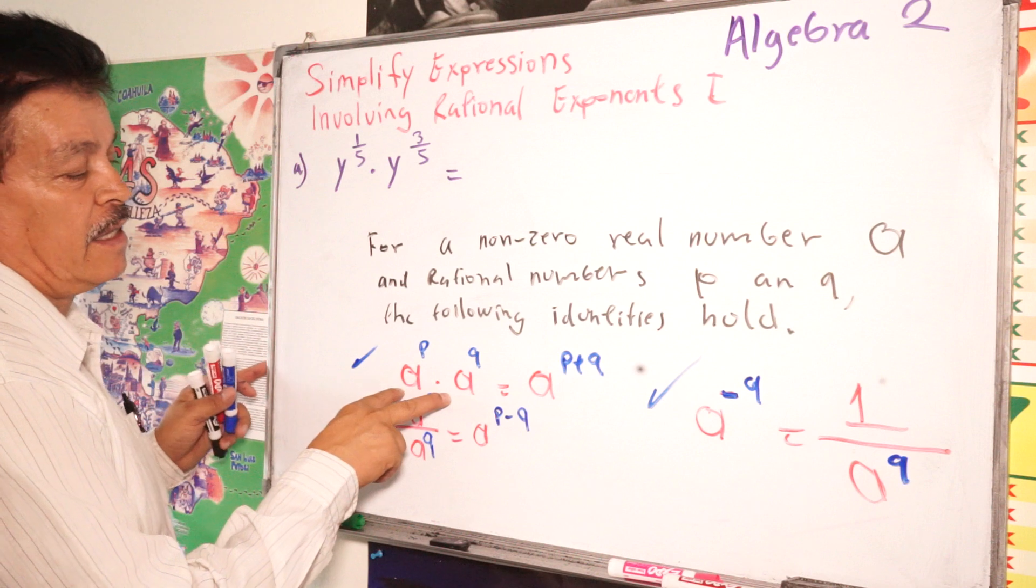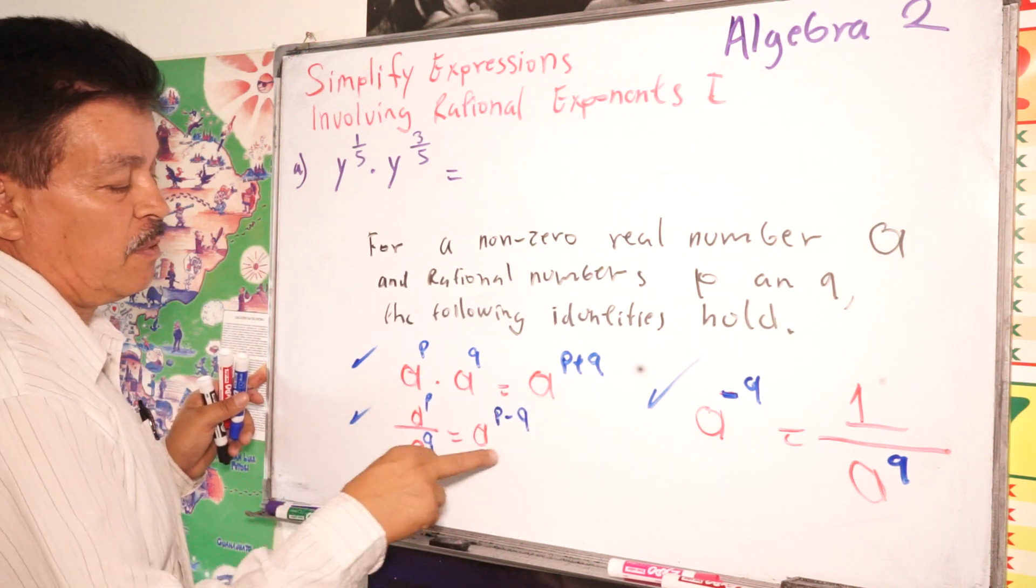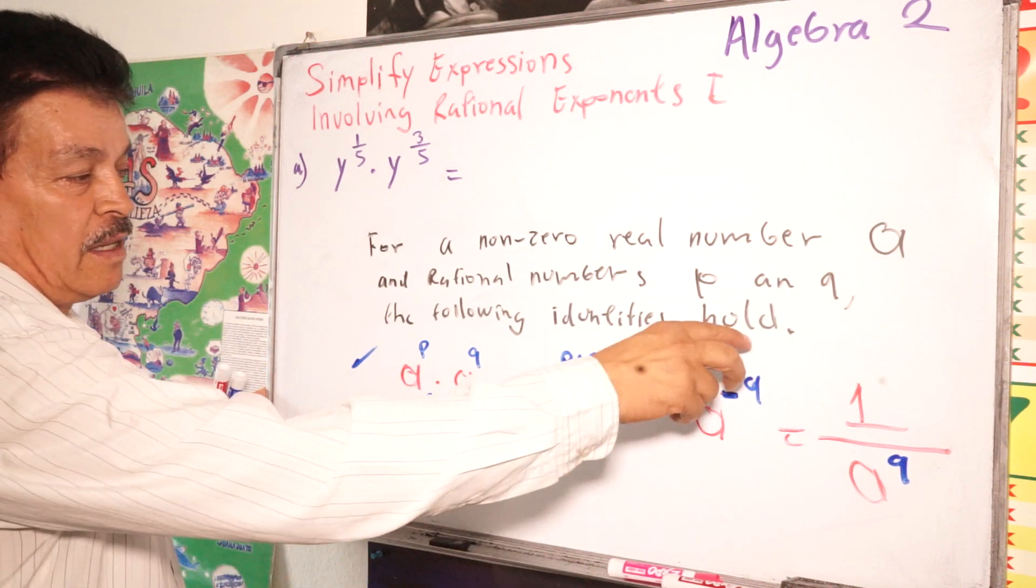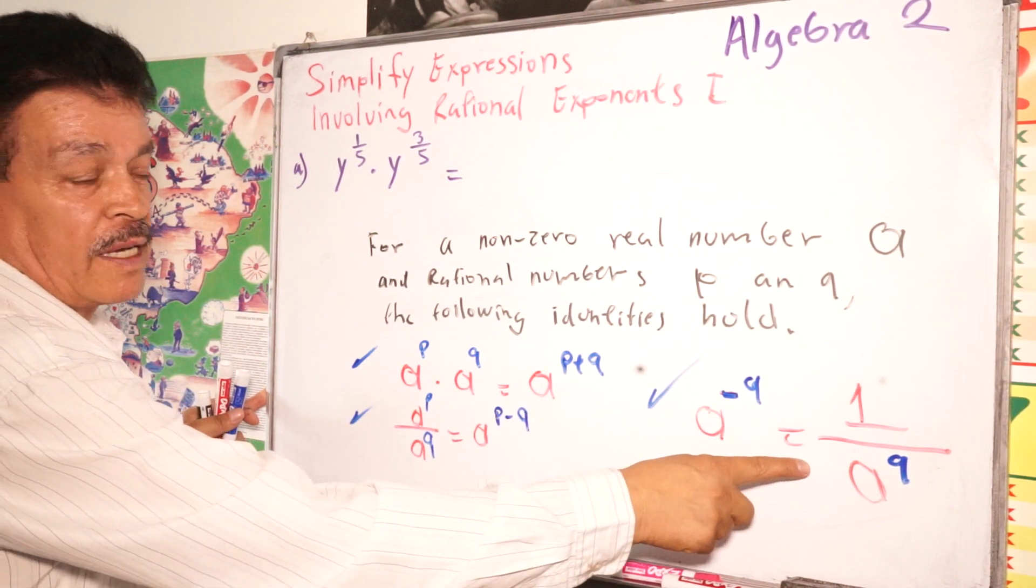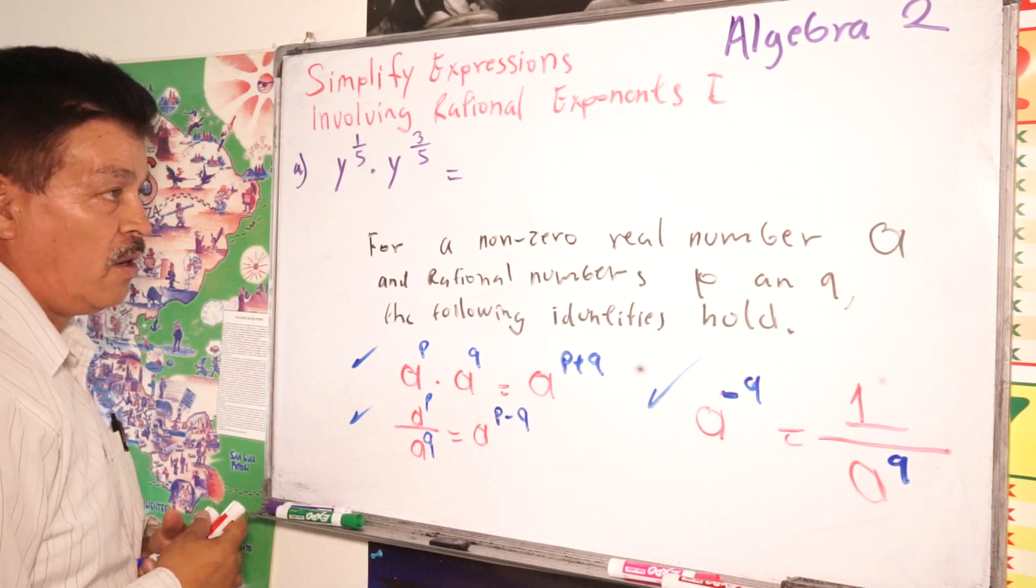When you multiply, the exponents are, when you divide, exponents subtract. In this case, when the power of the exponent is negative, it's negative. So you have to write in this way your answer. Alright?